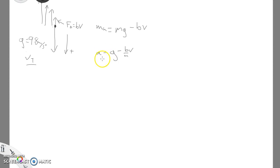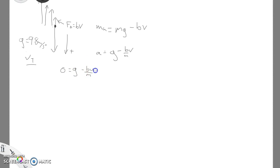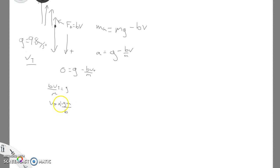Solving for A, we get A equals g minus (B/M) times V. This value for A is changing depending on what V is. We can find terminal velocity because that's when A equals zero. If A equals zero, then g minus BV over M equals zero, so terminal velocity equals gM over B, where B represents a constant depending on the shape of the object, its mass, and the density of the air.